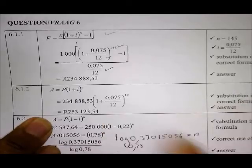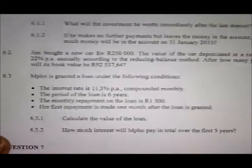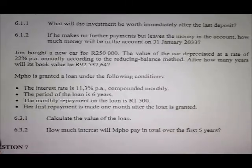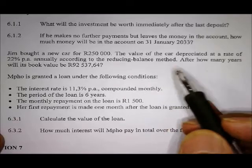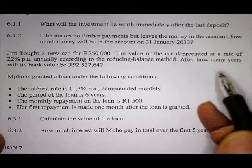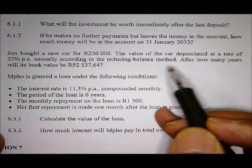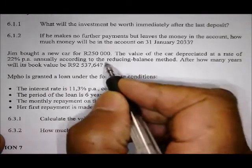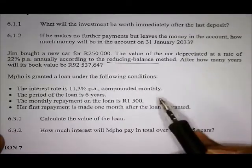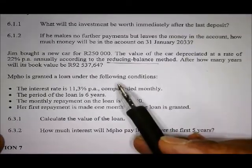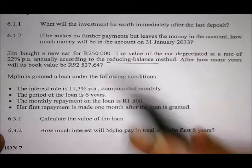Then the next question, 6.2. Jane bought a new car for 250,000 rand. The value of the car depreciates at a rate of 22% per annum annually, according to the reducing balance method. Reducing balance method. So that should ring a bell. After how many years will its book value be 92,537 rand and 64 cents?